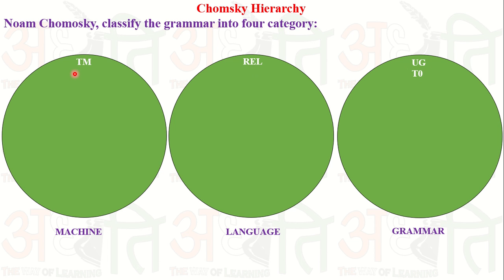So the relation is: the grammar is unrestricted grammar, the machine is a Turing machine, and the language accepted by the Turing machine is known as a recursively enumerable language. The grammar which generates a recursively enumerable language is simply known as unrestricted grammar, or Type 0 grammar.